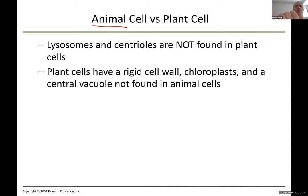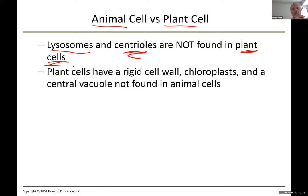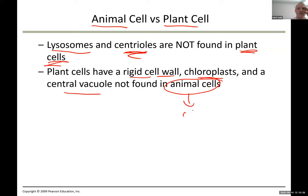Let's look at the main differences between animal and plant cells. For animal cells, lysosomes and centrioles are not found in plant cells — you find them only in animal cells. Plant cells have a rigid cell wall, chloroplasts, and a central vacuole — none of which are found in animal cells.